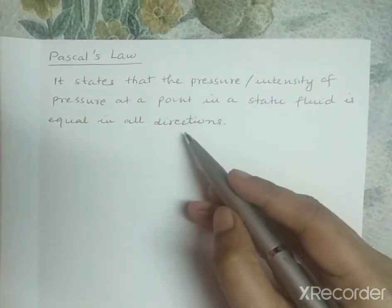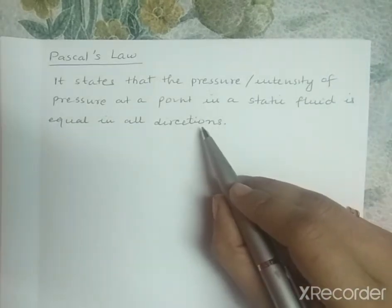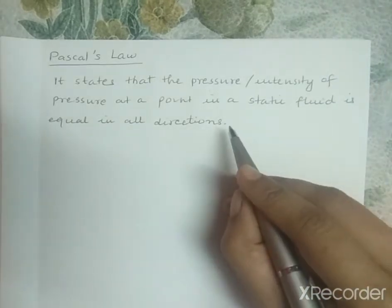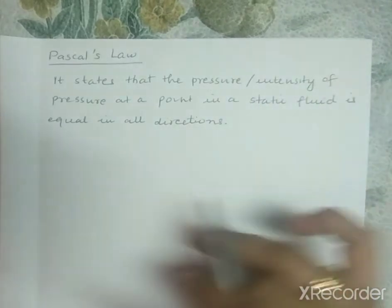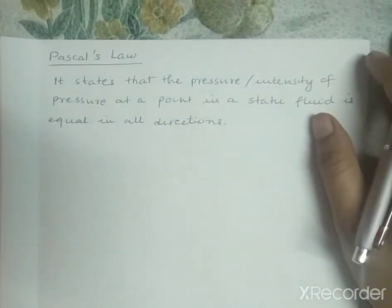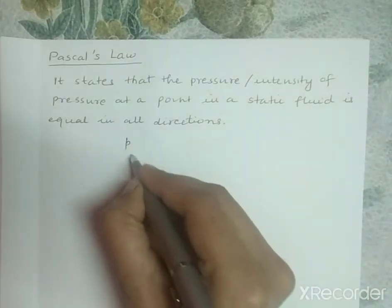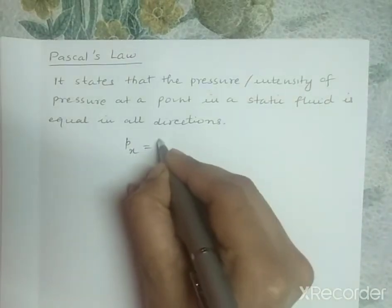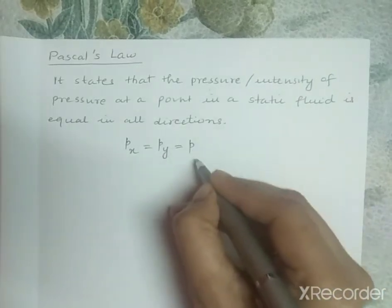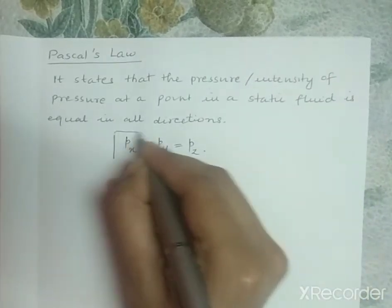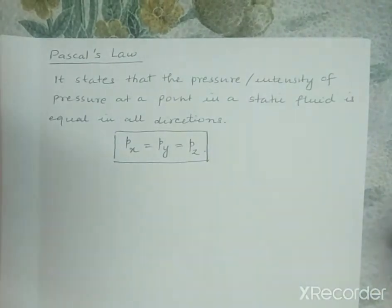It means that at a particular point in a static fluid, the pressure intensity is the same in all directions — that is, pressure intensity in the x direction is the same as in the y direction, which is the same as in the z direction. Mathematically, we can write the statement as px = py = pz.